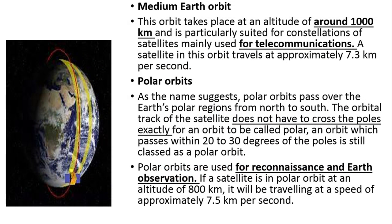Coming to the medium earth orbit: medium earth orbit has an altitude between 1,000 to 10,000 km — some say it is below 20,000, so the numbers may vary. The satellites placed in medium earth orbit are used for telecommunication.